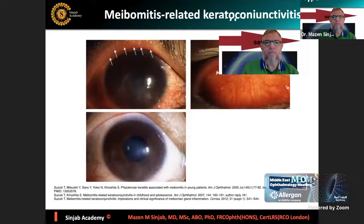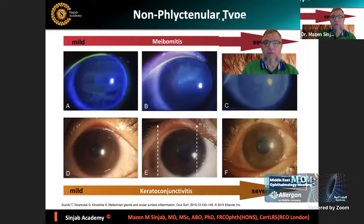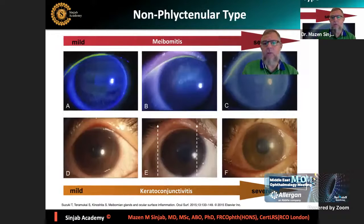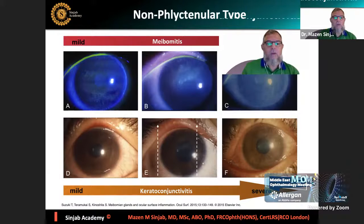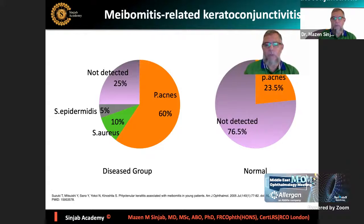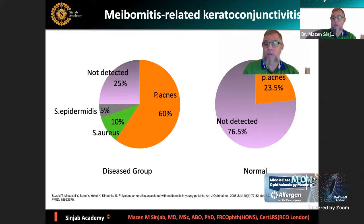The phlyctinular type shows a phlyctena on the cornea itself. The non-phlyctinular type shows opacity or generalized diseased epithelium. According to the most famous study in this regard, P. acnes was isolated in about a quarter of normal people as flora, while P. acnes consisted of 60% of pathogens isolated in the diseased group. So we have to keep this pathogen in mind in order to treat it.